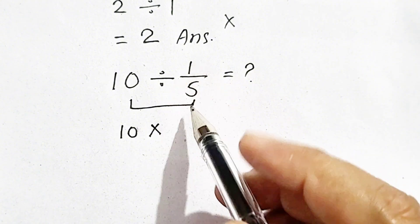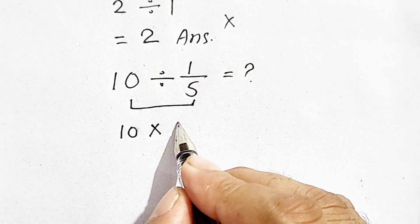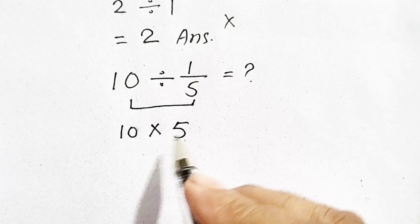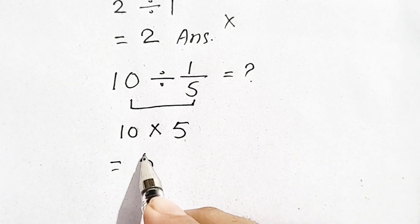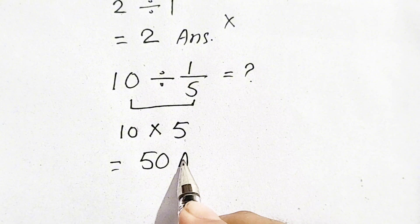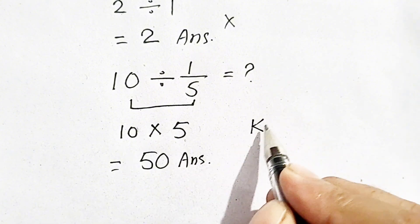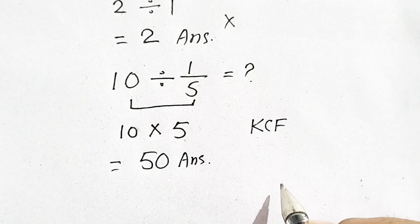So we have to flip 1/5. It will become 5. So 10 times 5 will equal 50, which will be our answer by using the KCF rule. Thank you for watching my YouTube video.